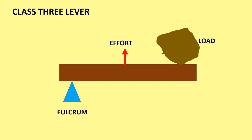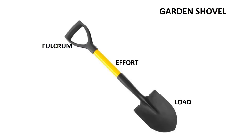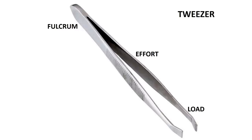Class 3 lever: In this class, the effort is between the load and the fulcrum. The mechanical advantage is more if the effort is closer to the load. Examples of class 3 lever are garden shovel and tweezers.